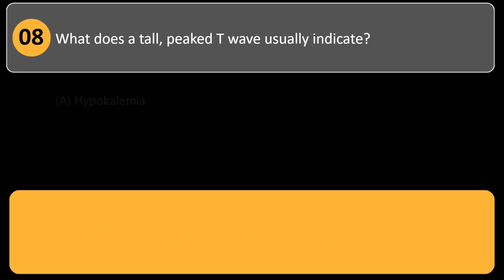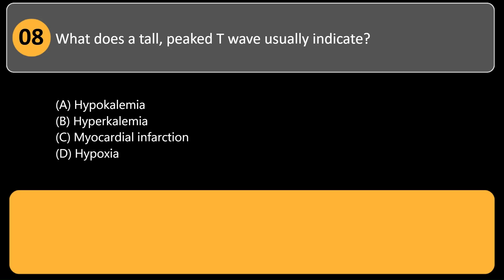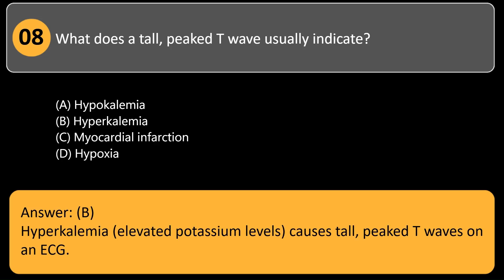What does a tall, peaked T-wave usually indicate? A. Hypokalemia. B. Hyperkalemia. C. Myocardial infarction. D. Hypoxia. Answer: B. Hyperkalemia, elevated potassium levels, causes tall, peaked T-waves on an ECG.